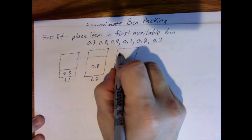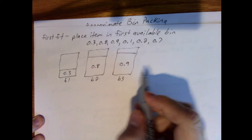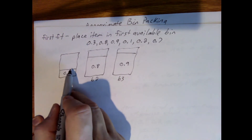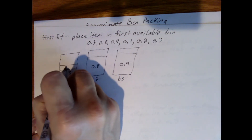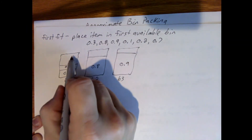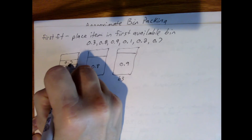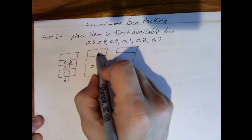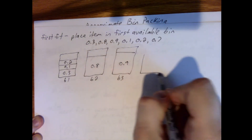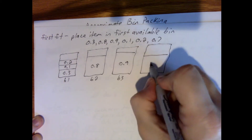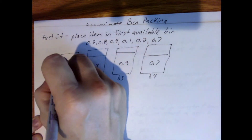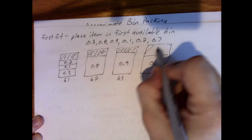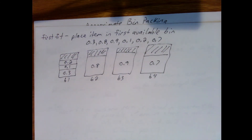Using the same data, 0.3 goes into bin 1, 0.8 starts bin 2, 0.9 starts bin 3. Now we get 0.1 — the first available bin is bin 1, so it goes there. Then 0.2: bin 1 still has 0.6 remaining, so 0.2 goes there. Then 0.7 won't fit in bin 1, won't fit in bin 2, won't fit in bin 3, so we need to start a fourth bin. This leaves empty space in all four bins.